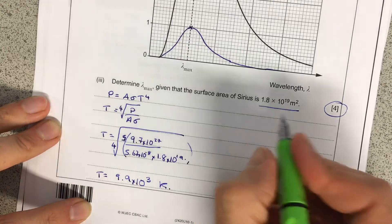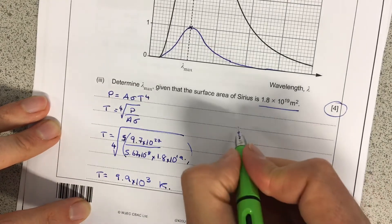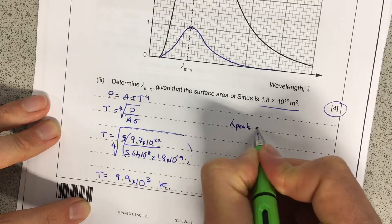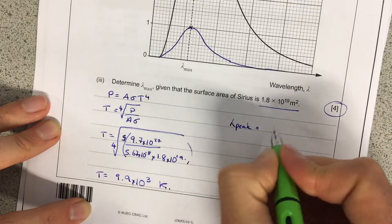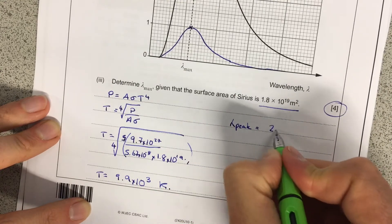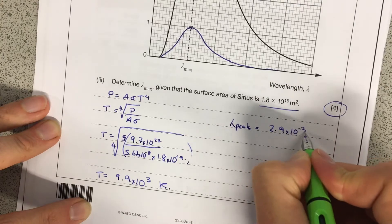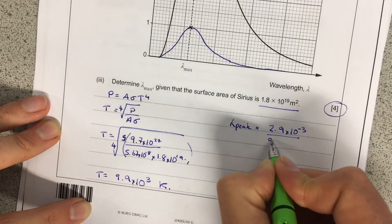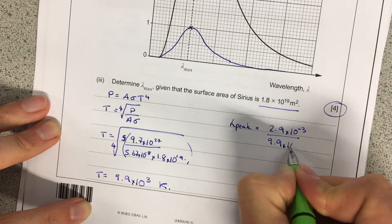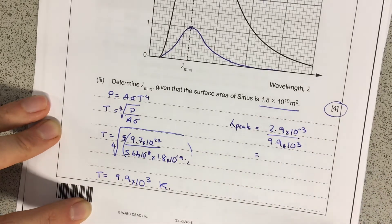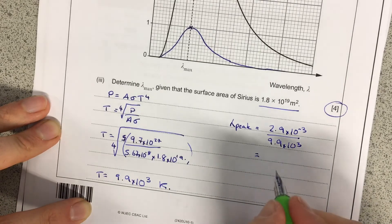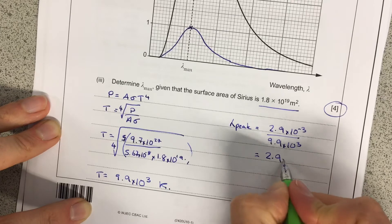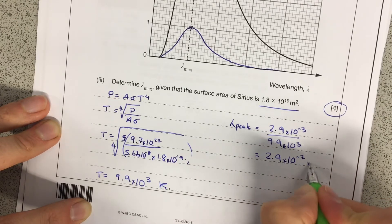OK, and then we're going to need to do Wien's law to this. And that's where lambda peak is equal to... My lambda peak is equal to 2.9, that's Wien's constant, times 10 to the minus 3, over this number we've just generated from down here, 9.9 times 10 to the 3. And that's going to equal 2.9 times 10 to the minus 7 metres.